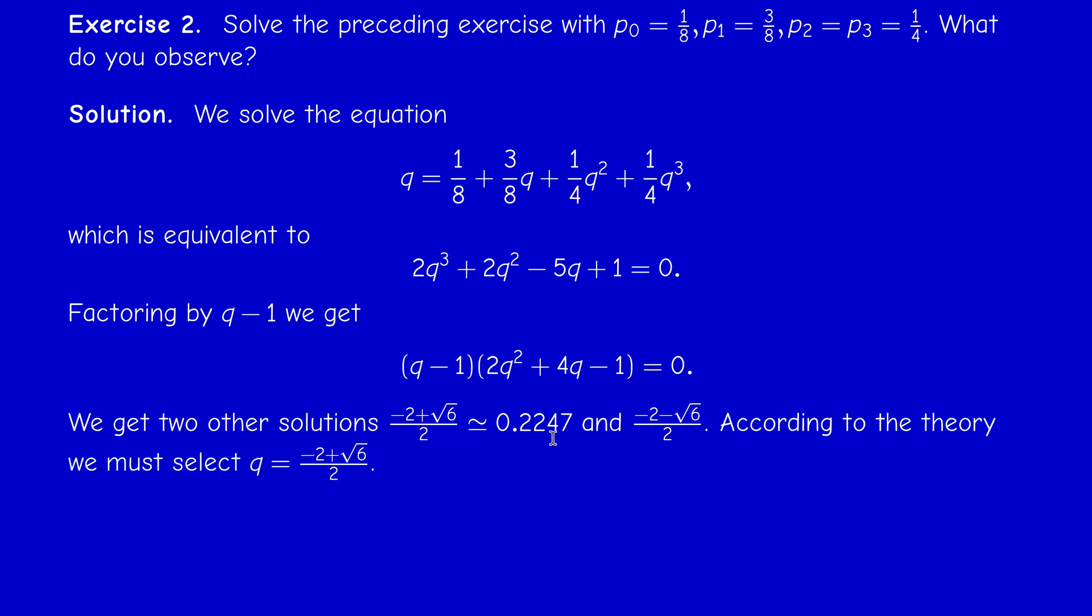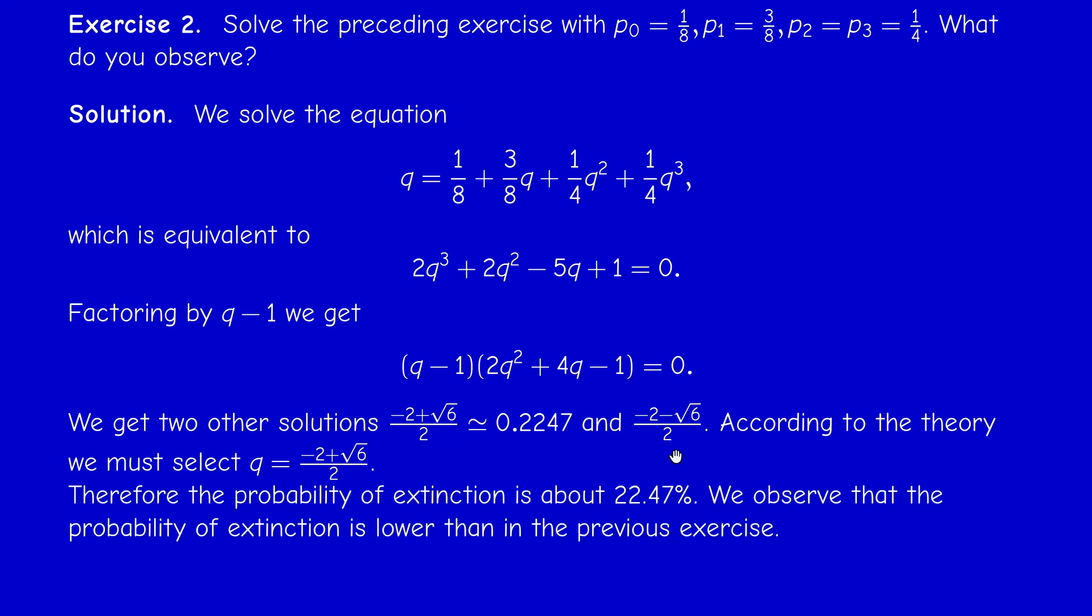We always select, if it has two solutions on zero to one, we select the smallest one. Now we moved from 79 to 22 percent, so the probability of extinction decreased drastically. How do you explain that? Now the probability of leaving no offspring has diminished from 3 over 8 to 1 over 8, so it was divided by 3 actually. Now each individual is more likely to reproduce than not to reproduce.